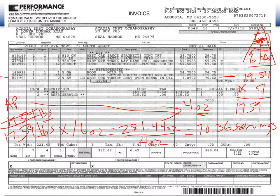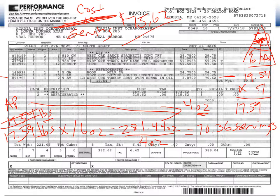I can expect 70.36 servings out of those two turkeys. How much am I paying? $75.62. Our cost per serving — remember, the word 'per' is your division line — so cost per serving: total cost $75.62 divided by 70.36 servings gives us $1.07 per serving.